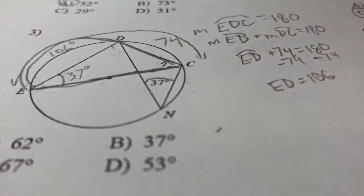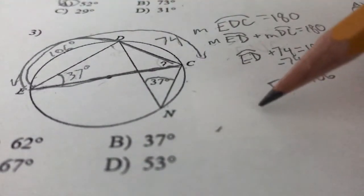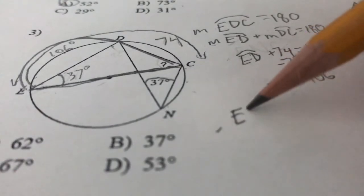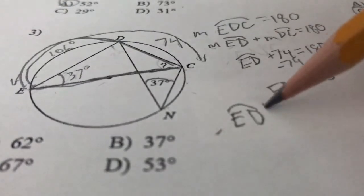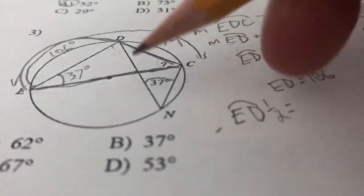Because we know that arc ED, the measure of arc ED, times 1 half is equal to angle DCE.